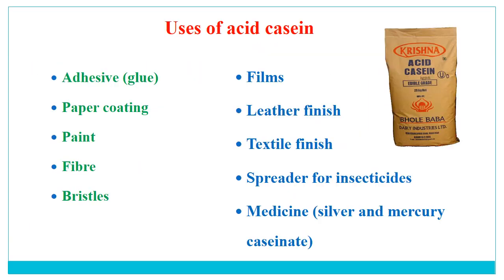The uses of acid casein, which comes under industrial casein, include use in different industries: as adhesive glue in the plywood industry, in paper coating, paint industry, fiber industry, and bristles. On the other side, it is used in films, leather finishing, textile finishing, as a spreader for insecticides, and even as medicine — for example, as silver and mercury casein.